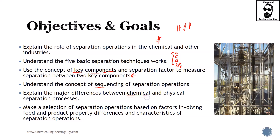Explain the major differences between chemical and physical separation processes — one is more related to chemistry per se and the other to physical forces. Also, make a selection of separation operations based on factors involving feed and product property differences and the characteristics of the separation operations.